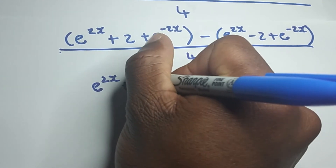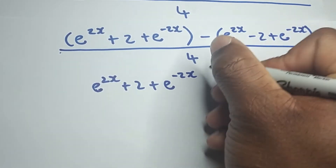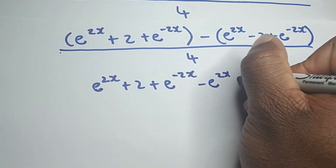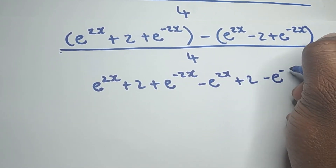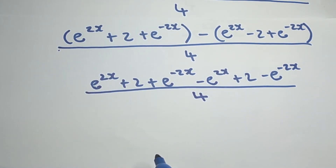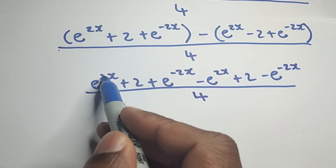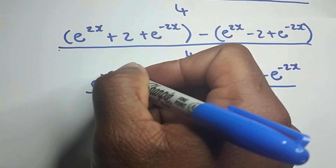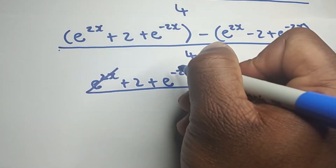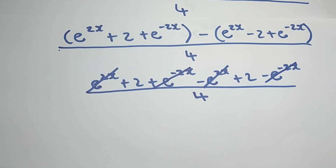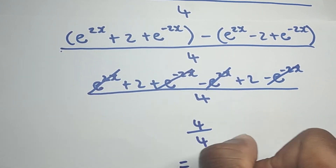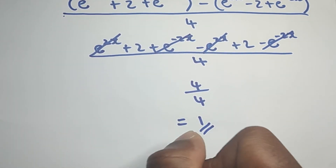Now we get rid of the parentheses. We have e to the 2x plus 2 plus e to the minus 2x, and we use the negative sign to expand the second bracket: minus e to the 2x plus 2 minus e to the minus 2x, all over 4. We can cancel: positive e to the 2x cancels with negative e to the 2x, and positive e to the minus 2x cancels with negative e to the minus 2x. We are left with 2 plus 2, which is 4 over 4, which equals 1. Therefore, proven.